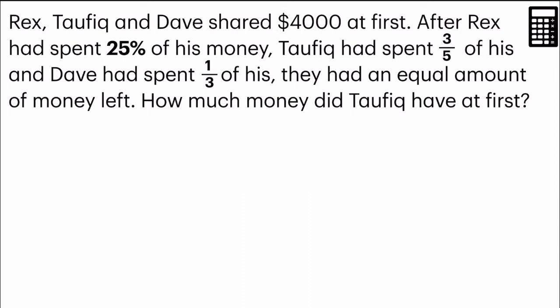Rex, Taufik and Dave shared $4,000 at first. After Rex had spent 25% of his money, Taufik had spent 3/5 of his and Dave had spent 1/3 of his, they had an equal amount of money left. How much money did Taufik have at first?